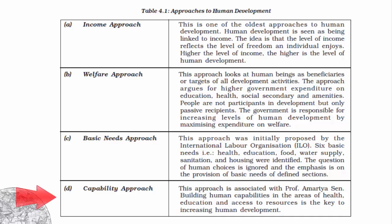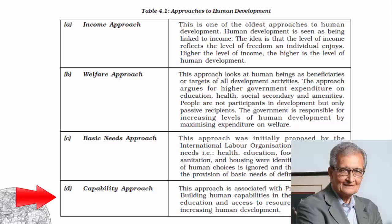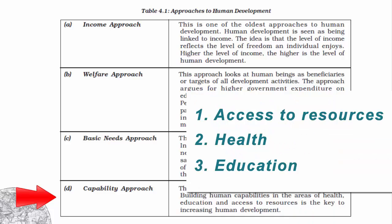The last one is the capability approach, associated with Professor Amartya Sen. Building human capabilities in the areas of health, education, and access to resources is the key to increasing human development. This goes back to what we summarized earlier in three key words.